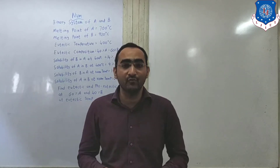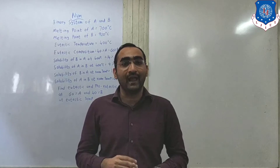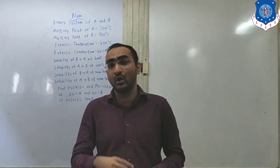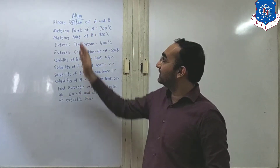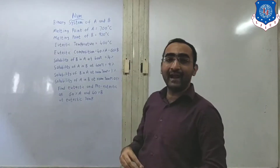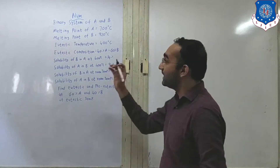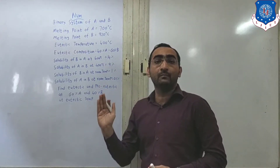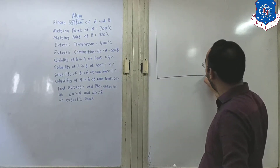With the help of this numerical you will be able to recognize how this thing happens and how it is useful for getting different types of composition. Now let us see the different data which is given to us — the numerical. There is a binary system of A and B given to us. The very first step we will be doing is making the phase diagram, so let us make one phase diagram.